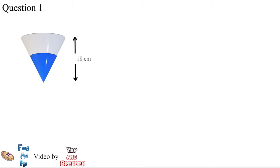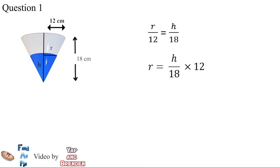We know that the height of the cone is 18 centimeters and the radius of the cone is 12 centimeters. We let R equal the radius of the water surface and H equal the height of the water level. Comparing R and H with 18 centimeters and 12 centimeters, by solving the equation we can get R equals 2/3 H.